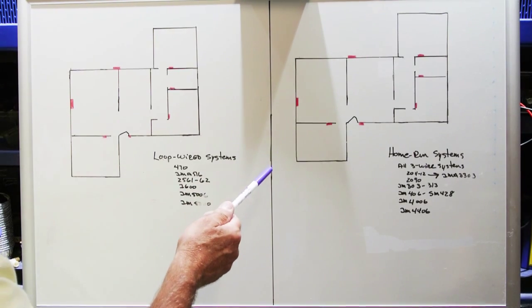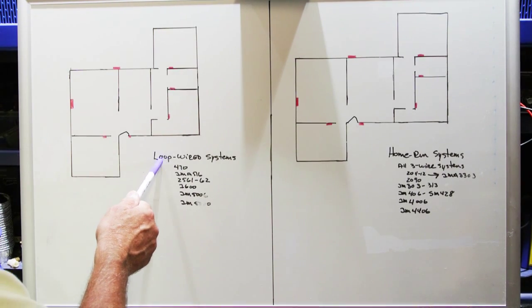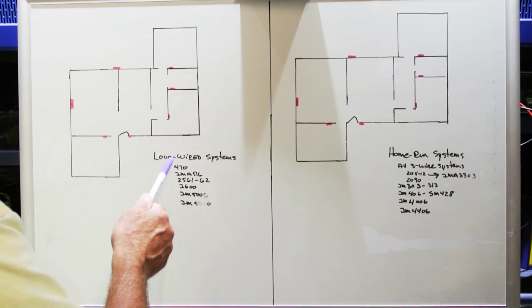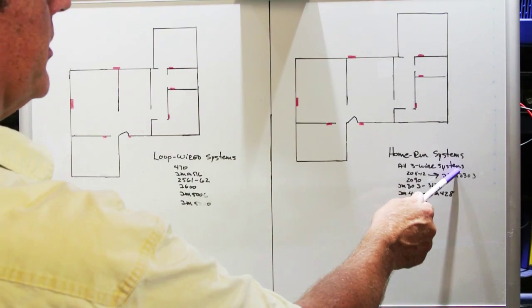There are two basic wiring schemes for Nutone intercom systems. You have what are called loop-wired systems, often referred to as daisy-chained systems, and you have home run systems.